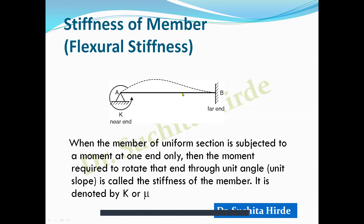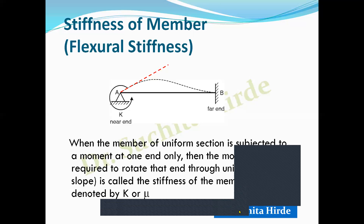For example, consider this beam. The moment required to make the slope theta equal to 1 at this end is called as flexural stiffness. So flexural stiffness is the moment required to make theta equal to 1, and this is what we are going to use in developing the stiffness matrix.